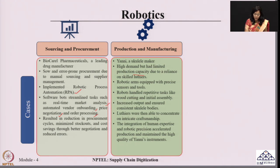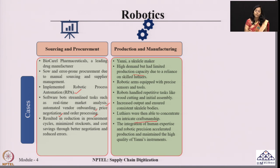The implementation of robots for these repetitive activities led to increased output and consistent body quality of the instrument with no quality issues. Because robotics took care of the repetitive tasks and quality management, the luthiers and skilled workforce were able to concentrate on the intricate craftsmanship. We can see how human expertise is beautifully integrated with robotic precision, resulting in increased production volume while maintaining maximum quality.